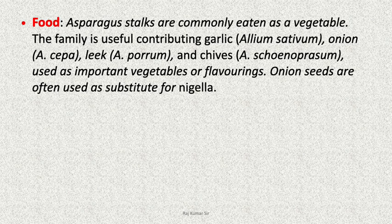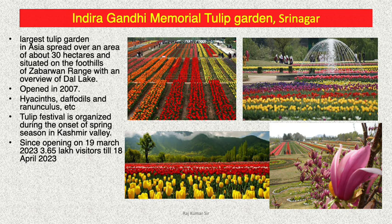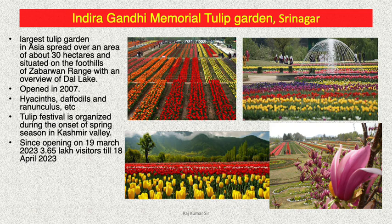An interesting fact about the Tulip Garden of Srinagar: named the Indira Gandhi Memorial Tulip Garden, it is the largest tulip garden in Asia, spread over an area of about 30 hectares, situated on the foothills of the Zabarwan range with an overview of Dal Lake. It was opened in 2007 as an annual event organized during the onset of spring season in Kashmir Valley. Since its opening, 3.65 lakh visitors visited this garden up to 18th April 2023.